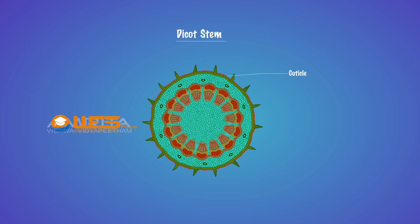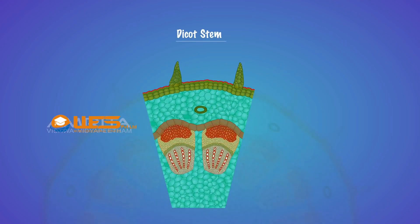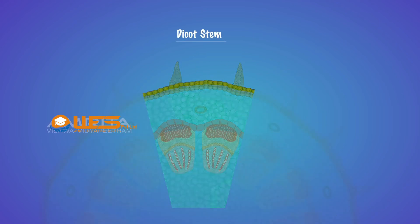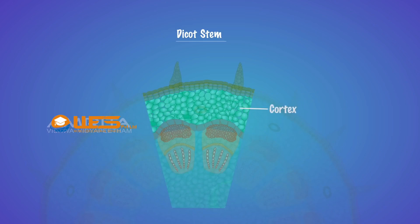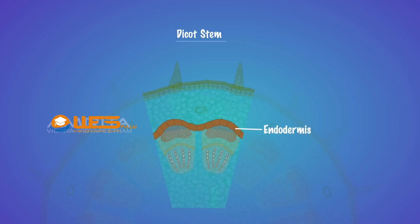Observations — Dicot stem: A typical dicot stem shows an outer layer of parenchyma cells forming the epidermis. Beneath the epidermis lies a few layers of colenchyma cells forming the hypodermis. The cortex in the dicot stem consists of several layers of parenchyma cells that lie between the epidermis and the vascular bundle. Endodermis is a single layer of parenchyma cells that separates the vascular tissue from the cortex.